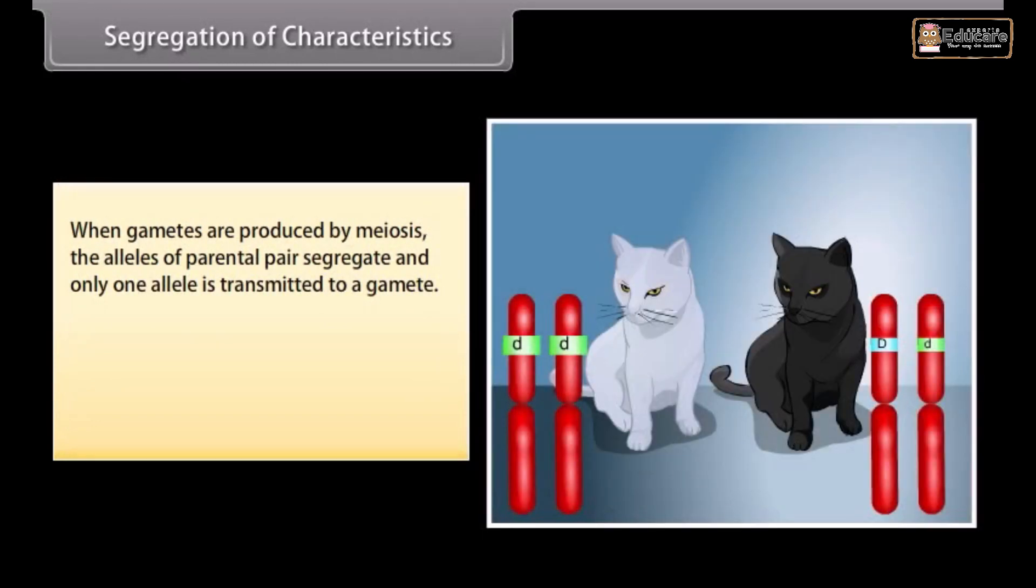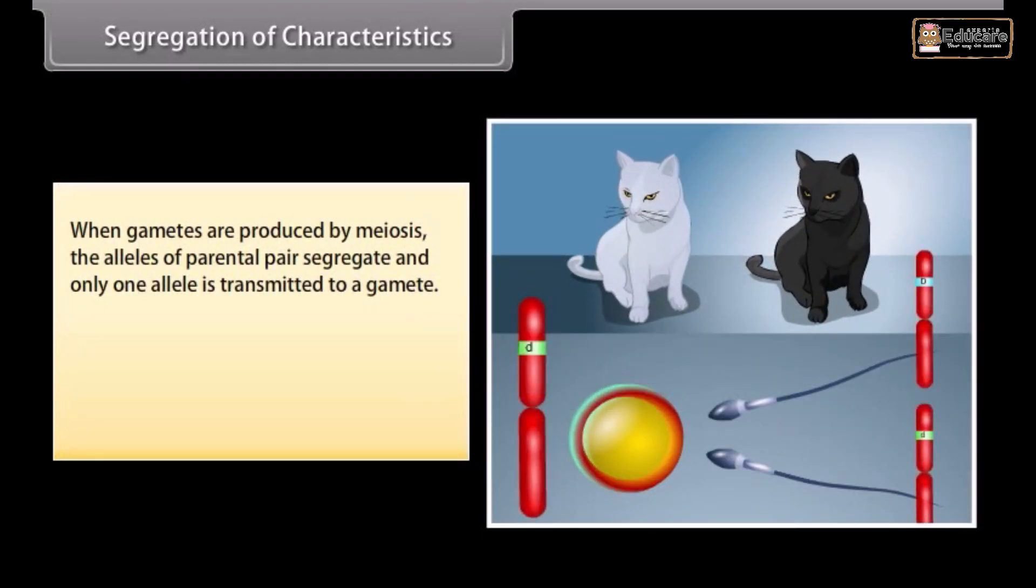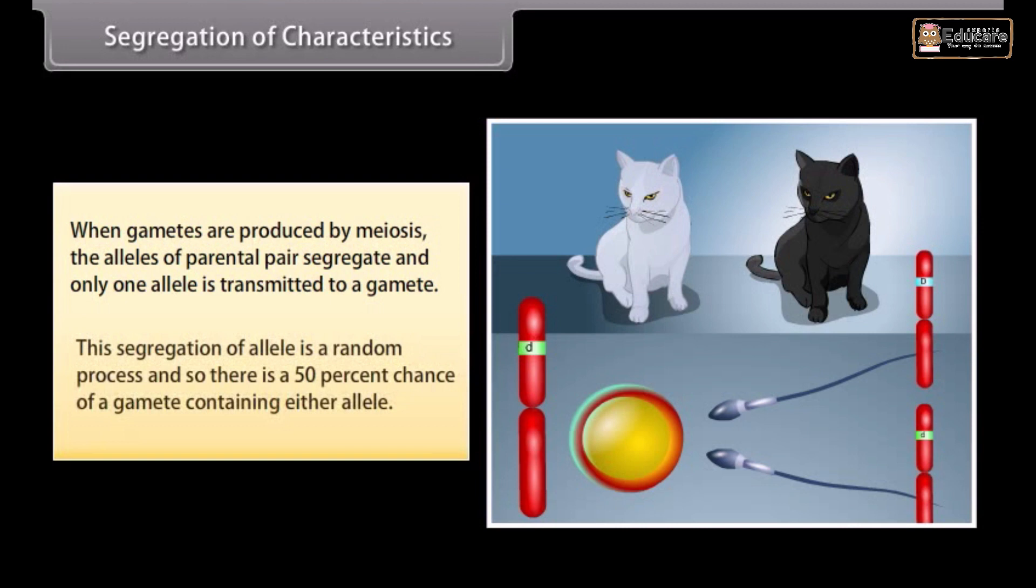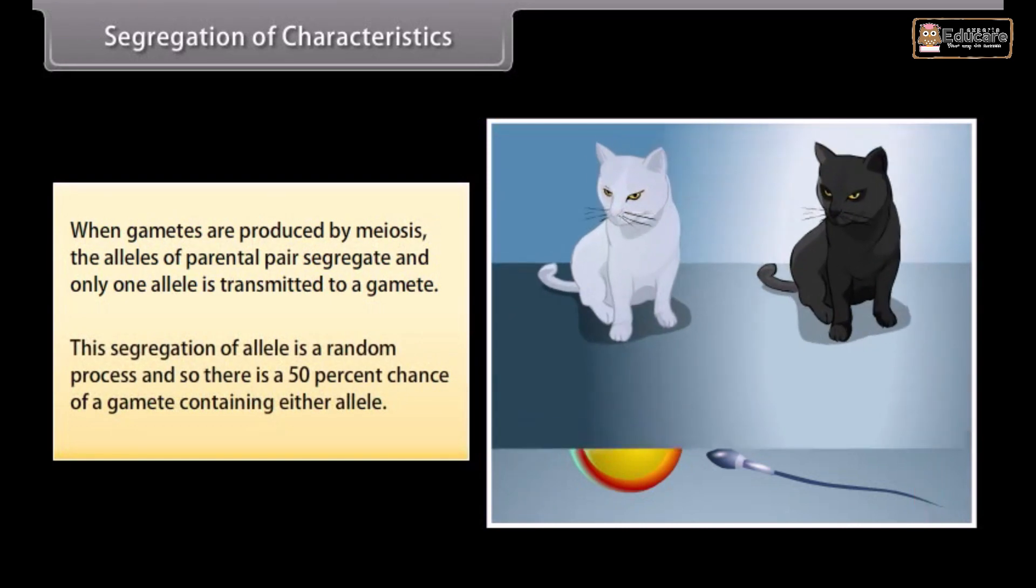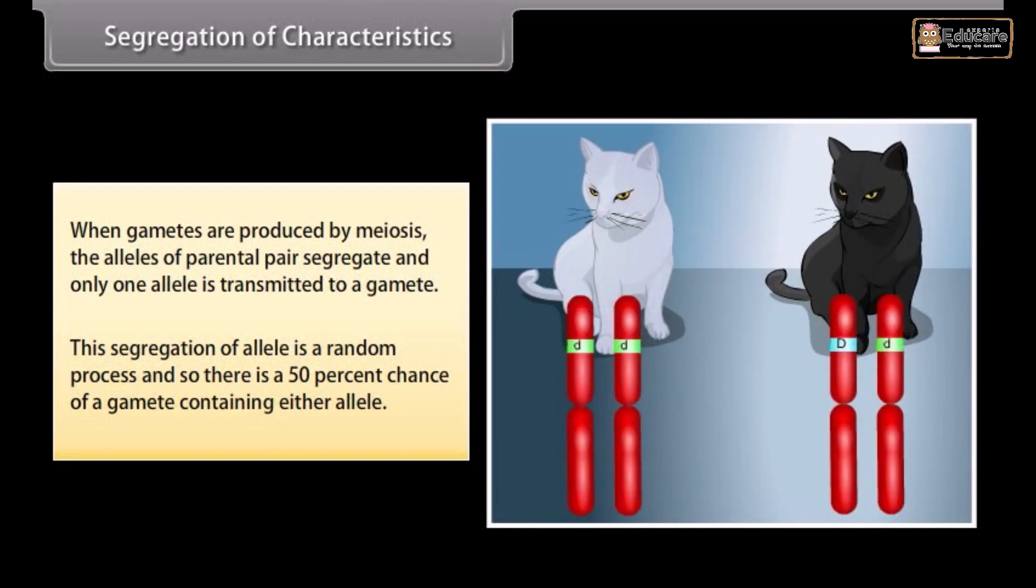Segregation of characteristics. When gametes are produced by meiosis, the alleles of parental pair segregate and only one allele is transmitted to a gamete. This segregation of alleles is a random process and so there is a 50% chance of a gamete containing either allele.